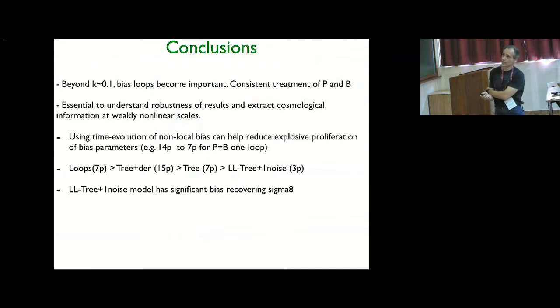So to conclude, as we go into the nonlinear regime, even very weakly nonlinear at K of 0.1, we see that the loops due to bias become important. And that's important in bringing consistency in the treatment that people do for P of K, in which they already include the loops and the bispectrum in which so far they haven't. It's much more robust in extracting cosmological information. You can reduce the proliferation of bias parameters that appears when you go to high order in perturbation theory by using time evolution to write the final amplitudes or these bias parameters in terms of the initial ones.